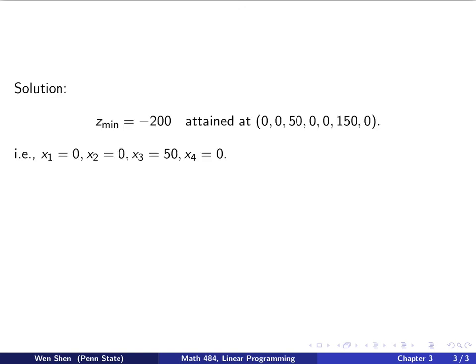However, with the presence of the degeneracy, our algorithm handled it very well, and we have no problem in solving it and concluding the optimal value, minimum value here. So let's summarize. The solution, z minimum is negative 200, attained at that point. Going back to the original problem where x1, x2, x3, x4 are the variables, these are the values, and the other three are the slack variables. Among the slack variables, the only non-zero term is x6, which was added to the second constraint. So the second constraint is satisfied with a strict inequality, while the other ones are satisfied with equality at the optimal solution.